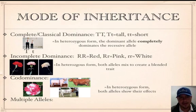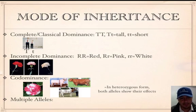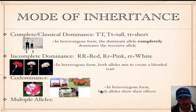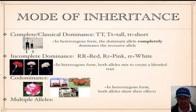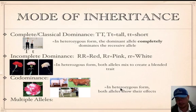Next is codominance. In this case you have a red and white allele, but when you have the heterozygous form big R little r, instead of pink you actually have red and white both showing. Another example: big B is brown and little b is white — when you have big B little b, you get brown spots and white spots. This is different from incomplete dominance because the traits did not mix; both alleles are showing their effects in the heterozygous form. Some people have one green eye and one brown eye — that's codominance.